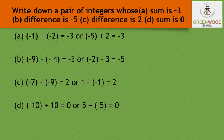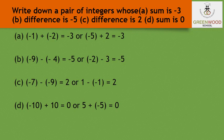In this example, we find pairs of integers whose sum is minus 3. I select minus 1 and minus 2 — adding them gives minus 3. Similarly, minus 5 and 2 also add up to minus 3. For the second part, the difference is minus 5. Taking minus 9 and minus 4, subtracting minus 4 from minus 9 gives minus 5. Similarly, subtracting 3 from minus 2 also gives minus 5.